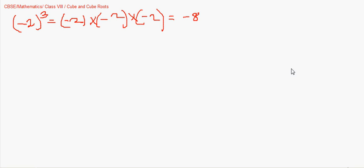Using the same logic, to find the cube root of -1331: first find the cube root of 1331, which is 11 (since 11³ = 1331). Since the original number is negative, the cube root is -11. So the cube root of -1331 is -11.